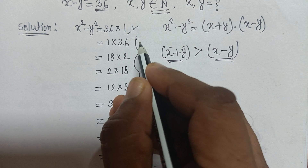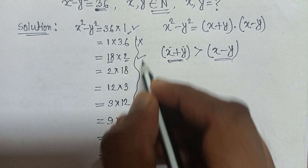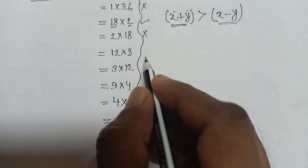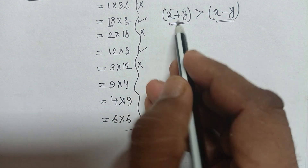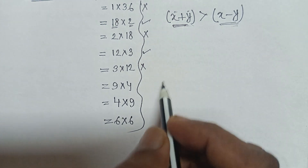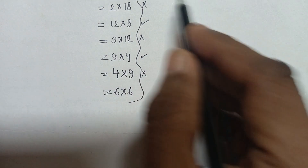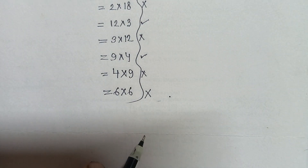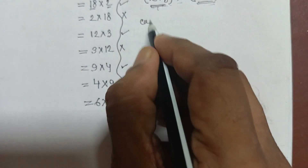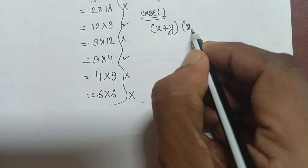Using this constraint, we eliminate invalid factor pairs. Where x plus y is not greater than x minus y, or where x plus y equals x minus y, those cases are cancelled. After elimination, we are left with four valid cases.